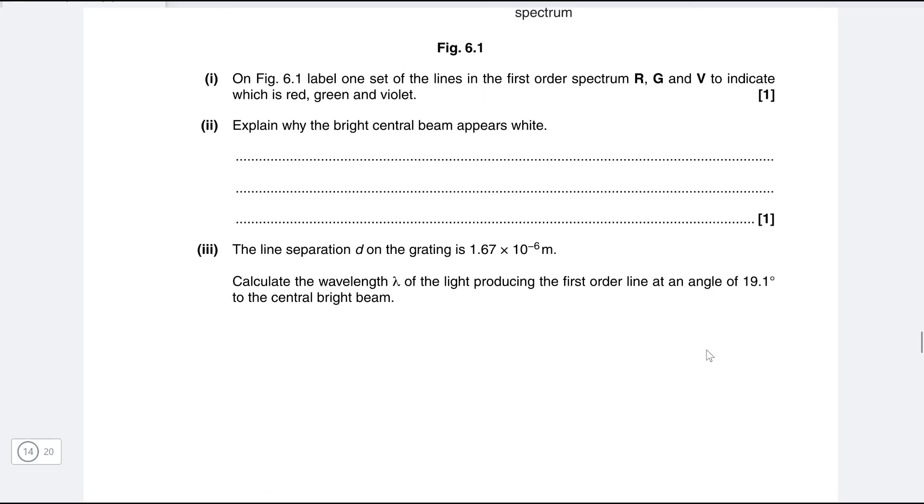Okay part two explain why the bright central beam appears white. Well we can say that all three colors add up to produce white light.